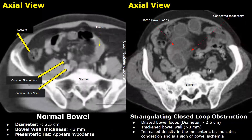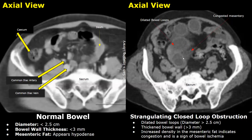A strangulating closed loop obstruction occurs when blood flow to the bowel is compromised, leading to ischemia. It is a very serious condition. Along with dilated bowel loops you will find increased bowel wall thickening and an increased density in the mesenteric fat outside the bowel. This increased density in the fat is a strong sign of bowel ischemia. Normally the mesenteric fat appears gray — much darker than the bowel — but these areas have an increased density indicating congestion in the mesenteric fat.